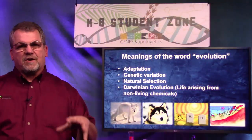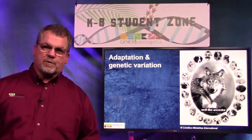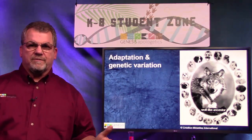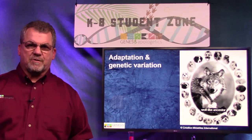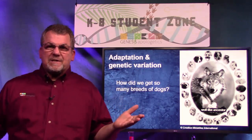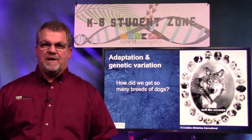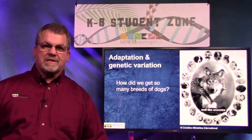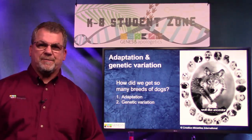Let's start by taking a closer look at these two. Most scientists agree that all the different breeds of dogs came from wolf-like ancestors. But how did we get so many breeds? There are hundreds of them. Well, the answer is adaptation and genetic variation.